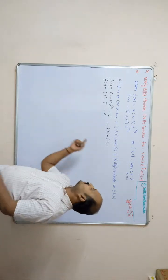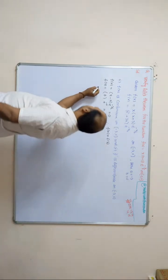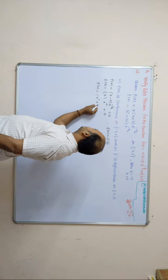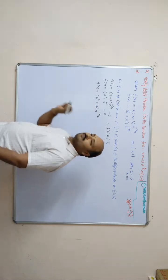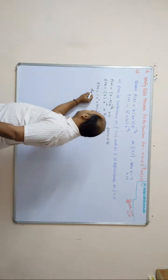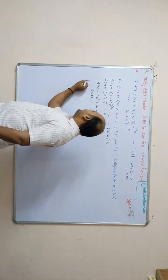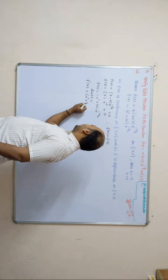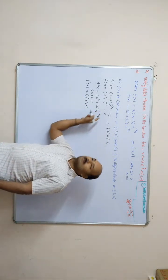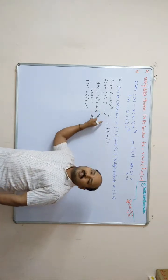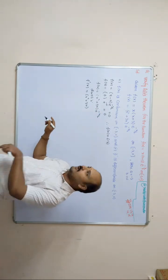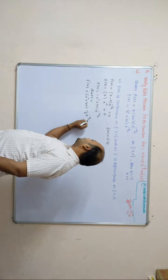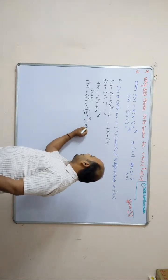By Rolle's theorem, there exists c in (a, b) such that f'(c) = 0. To find c, we differentiate f(x) = (x² + 3x)e^(−x/2) with respect to x using the product rule (uv formula): f'(x) = (x² + 3x) · d/dx[e^(−x/2)] + e^(−x/2) · d/dx[x² + 3x]. Since d/dx[e^(−x/2)] = −(1/2)e^(−x/2), we get f'(x) = (x² + 3x)(−1/2)e^(−x/2) + e^(−x/2)(2x + 3).